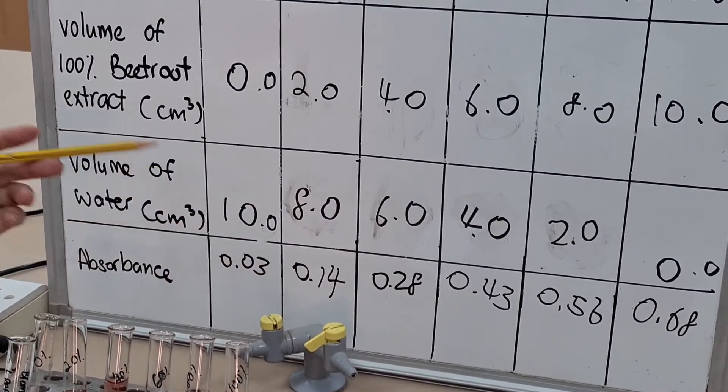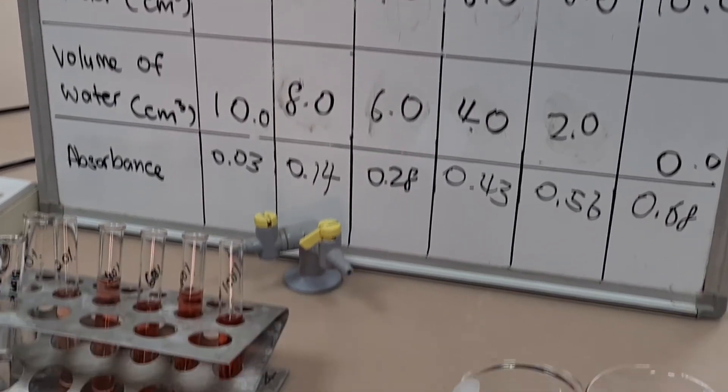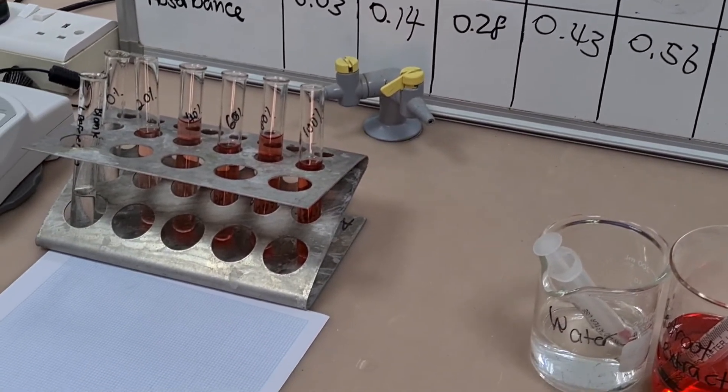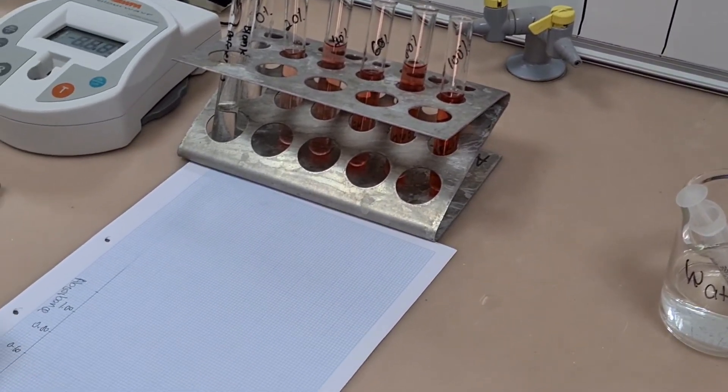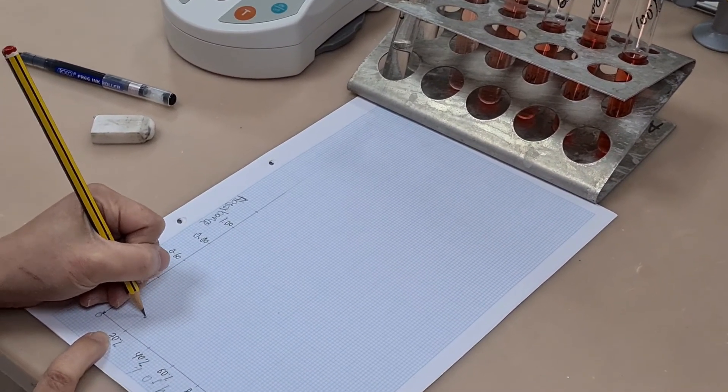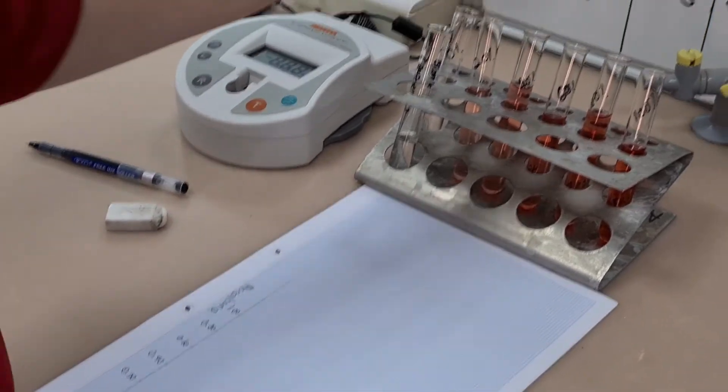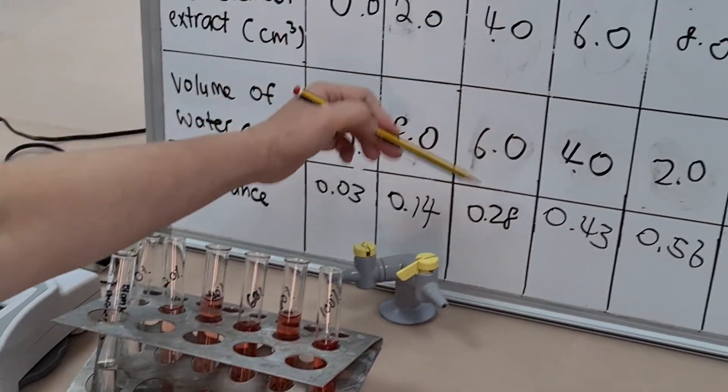The error that's been done on the x-axis is that they've written 20%, 40%, 60% and so on, as well as writing a percentage of beetroot extract. So remember that the unit or the abbreviation for the unit should just appear once in the title of the axis.